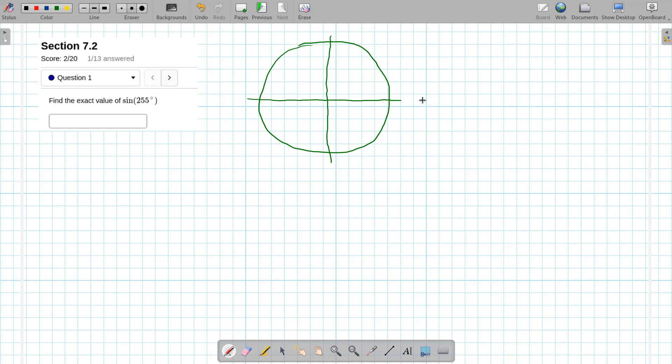All right, so 255, let's think about where that is. So we have 90 degrees up here, we have 180 degrees over there, and then if we add another 90, that's going to give us 270 degrees over there.